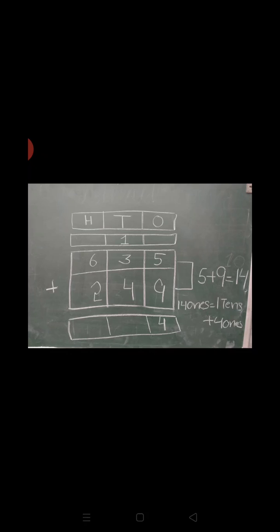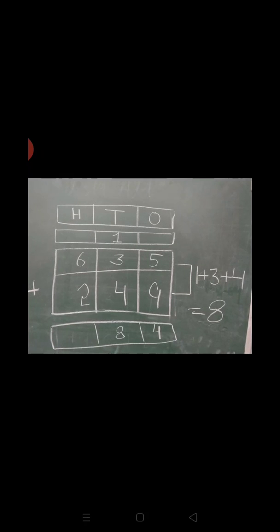Now we are doing one example of this type of question. We have two numbers: 635 and 249. You can see 5 and 9 are on the ones place. First we add both these numbers: 5 plus 9 equals to 14. You know 14 ones equals to 1 ten plus 4 ones. So we write 4 in the ones place and 1 in the tens place. In the next step, we add tens: 1 plus 3 plus 4 equals to 8. So we write 8 in the tens place.